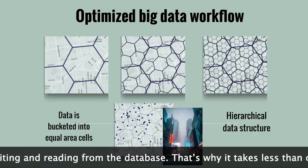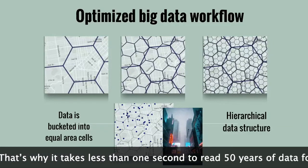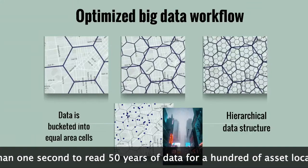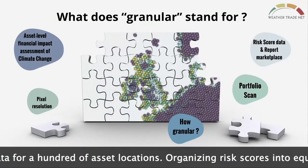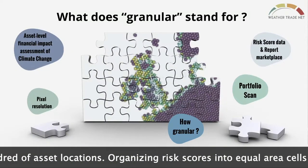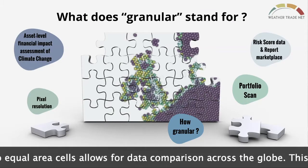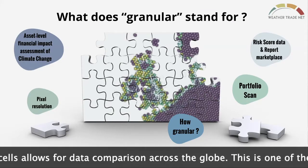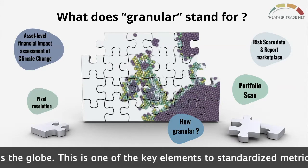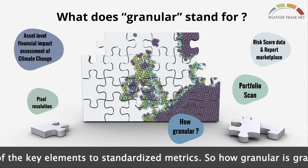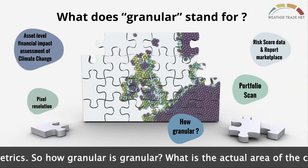That's why it takes less than one second to read 50 years of data for hundreds of asset geolocations. Organizing risk scores into equal area cells allows for data comparison across the globe. This is one of the key elements to standardized metrics.